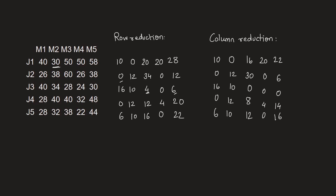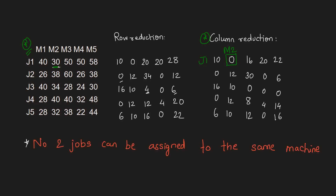Now we will make the allotments, because the optimum solution to this reduced matrix is the same as the optimum solution to the original matrix. Whatever allotment we get for the column-reduced matrix applies to the given matrix, and we can add the corresponding time values to get the minimum total processing time. One key rule: no two jobs can be assigned to the same machine, and no two machines can be assigned to the same job — a unique one-to-one combination.